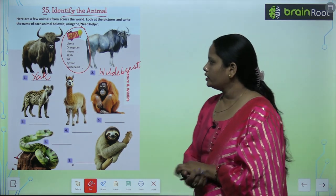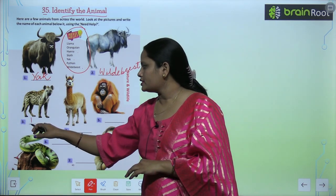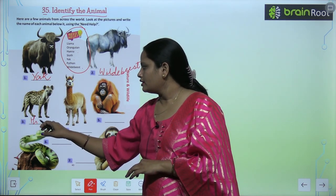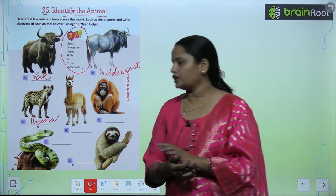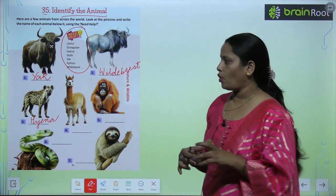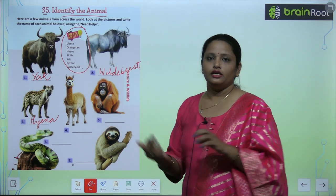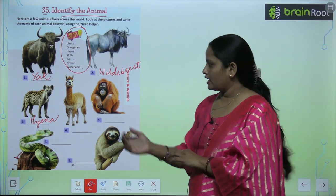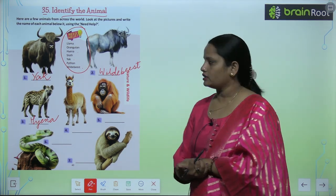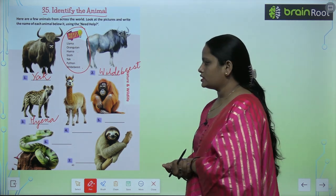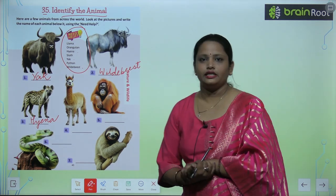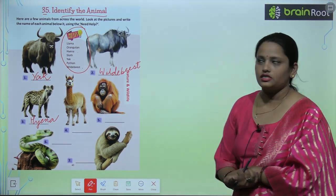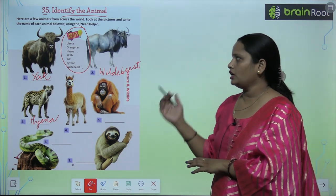Now the third animal — the third animal is hyena. So similarly, find the name of the rest of the animals from the need help box.